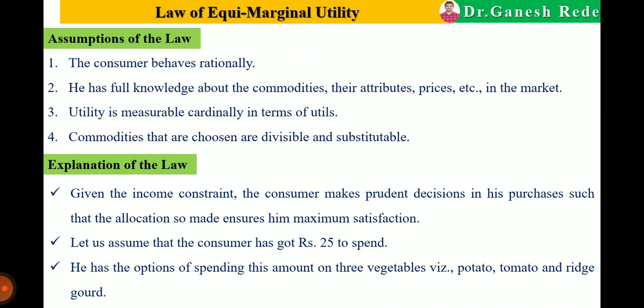For every law there are assumptions. The first assumption is that the consumer behaves rationally — the consumer on whom we apply this law must be a normal, rational person. Second, the consumer must have full knowledge about the commodities, their attributes or characteristics, and their prices in the market.